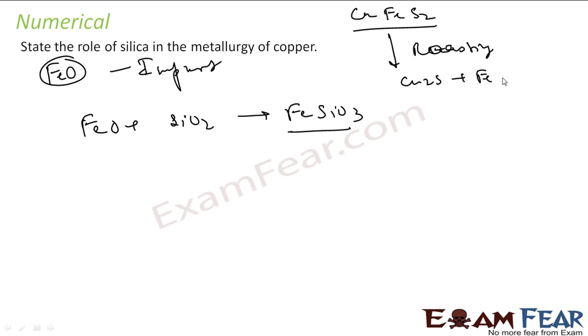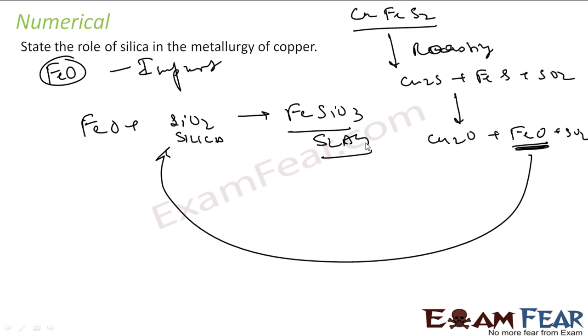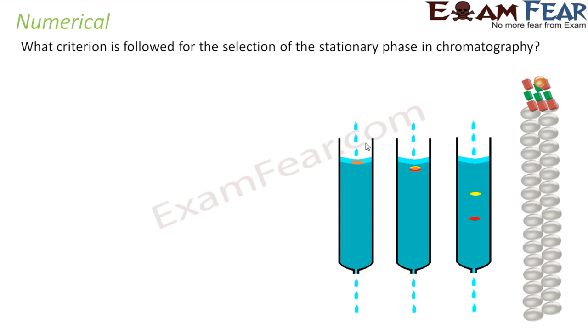When you heat it further, what you get is Cu2O, FeO and SO2. So this FeO is an impurity here. This impurity has to be removed by adding SiO2, that is nothing but silica. And what you get is slag, and slag can easily be removed because they are lighter in weight.